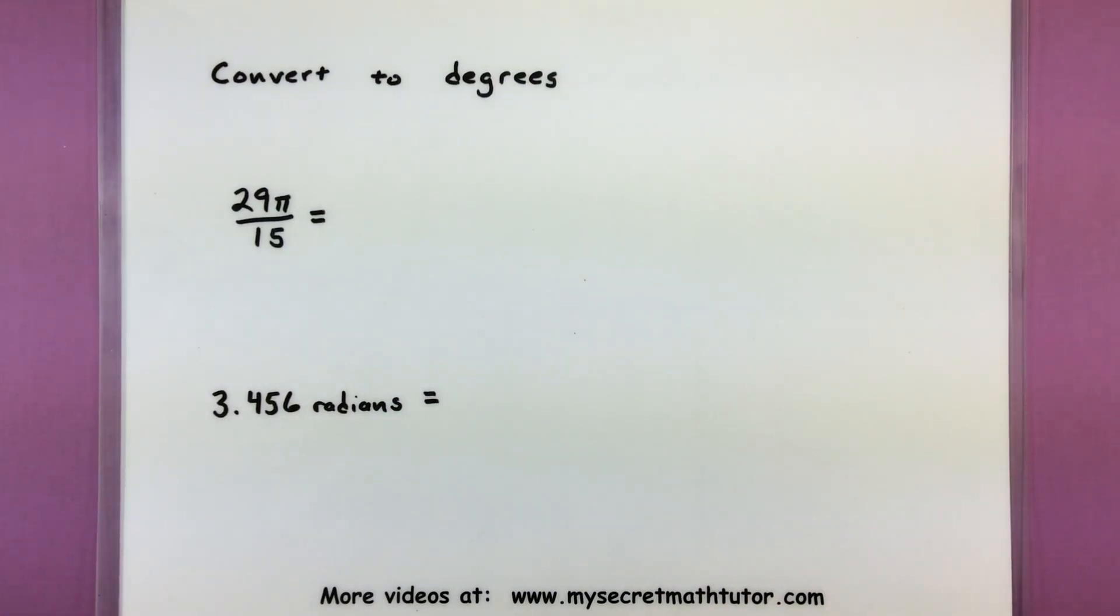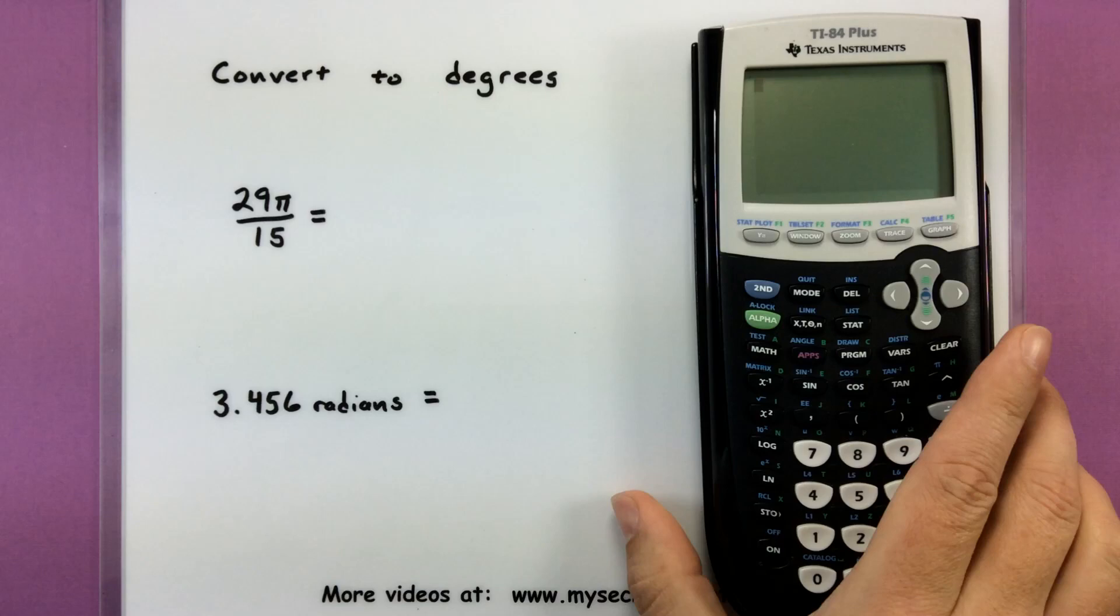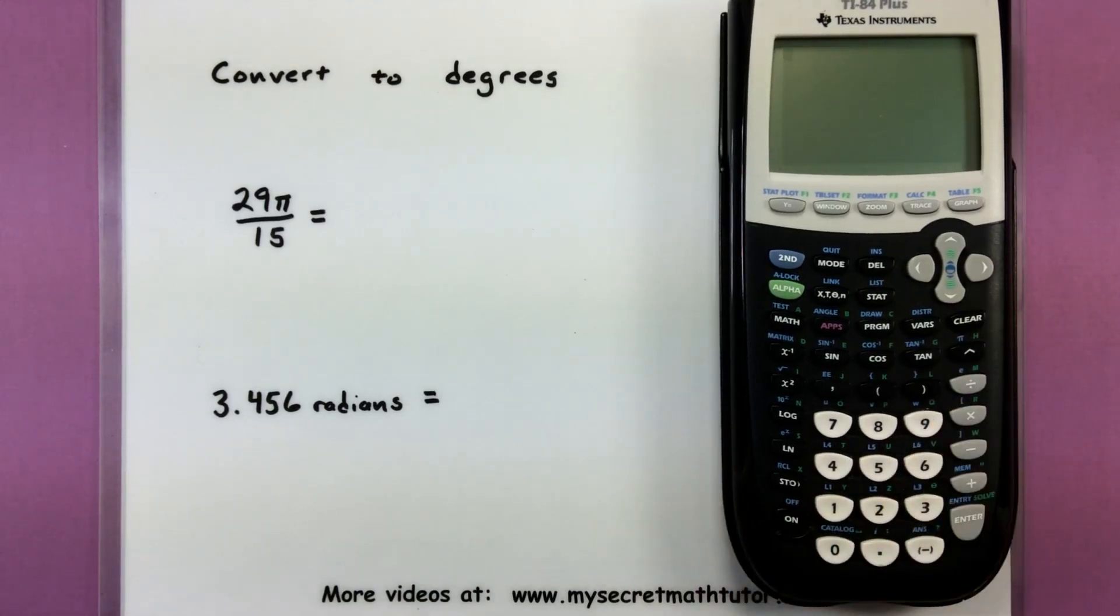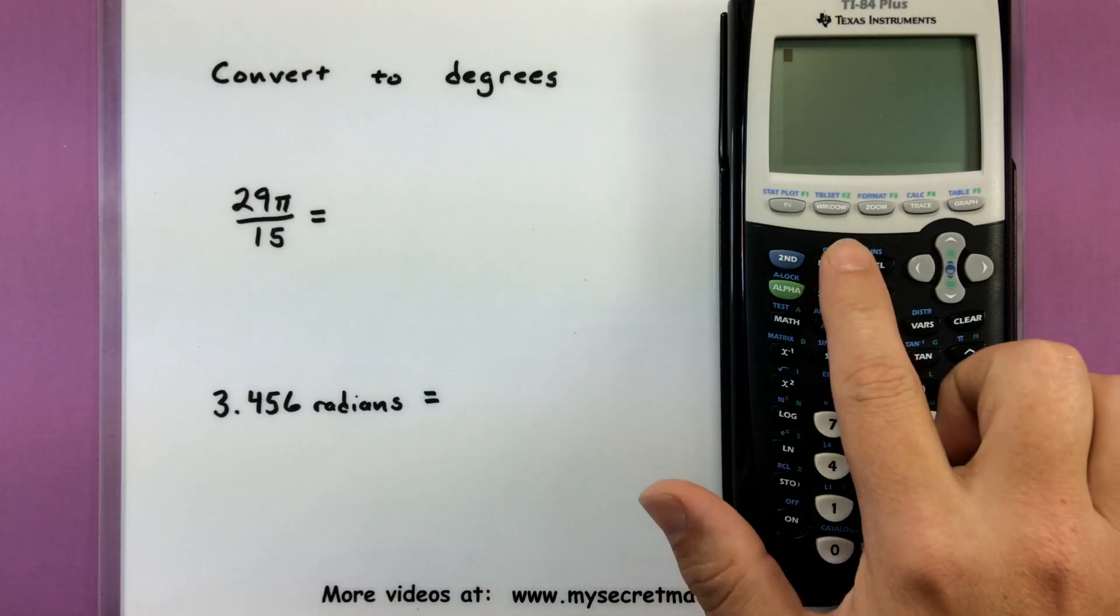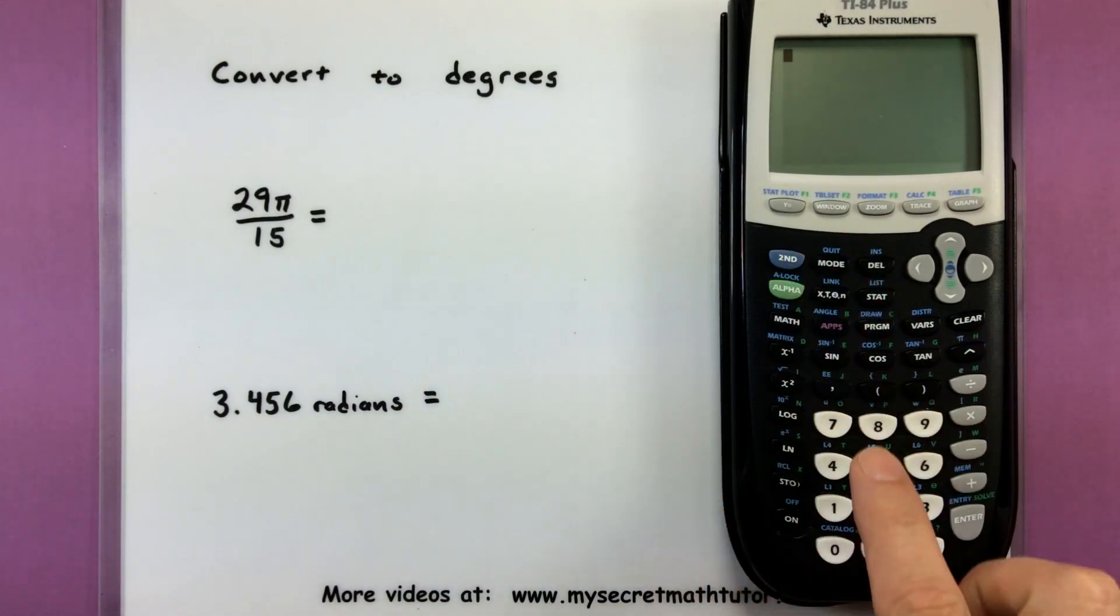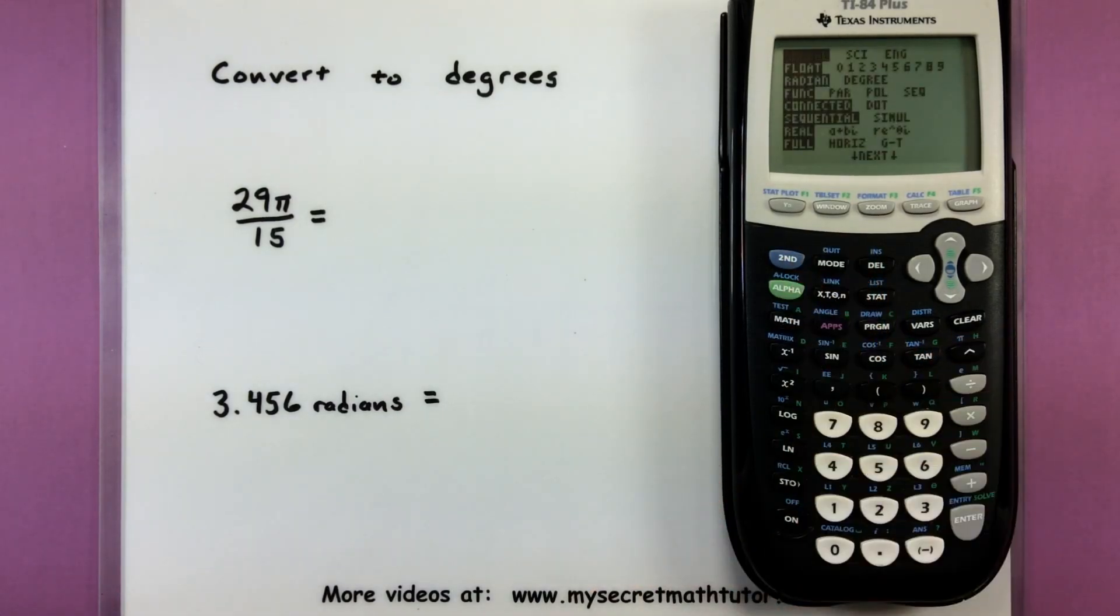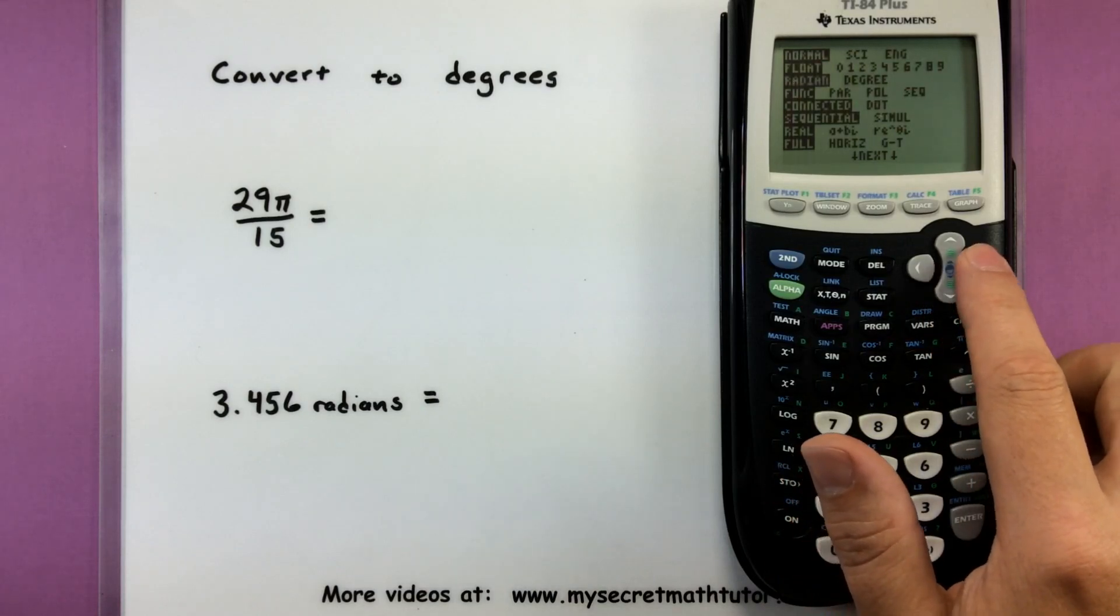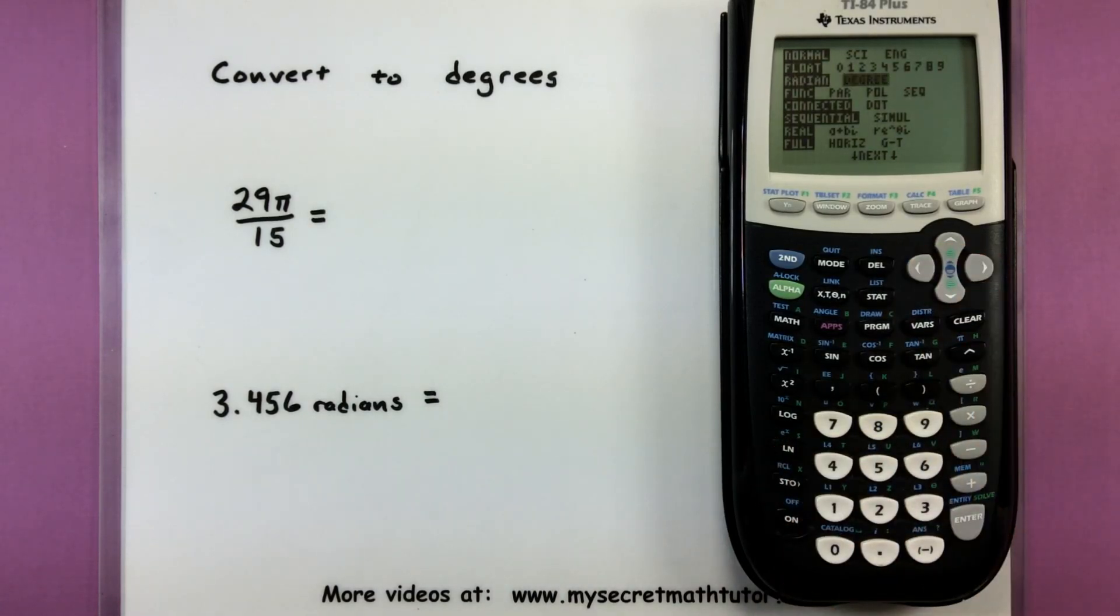So we want to use our calculator to convert this radian measure into degrees. Let's go ahead and grab those calculators. The first thing that you want to do is set the proper mode. You can find the mode button just right here next to the second button. And you'll notice that it can be set to radians or degrees. You want to set it to whatever you're converting it into.